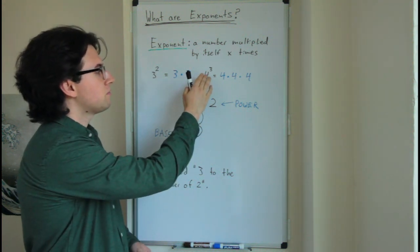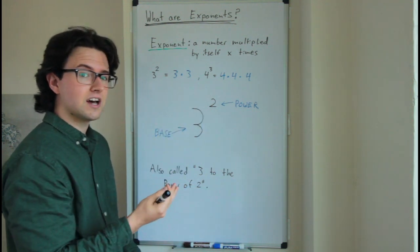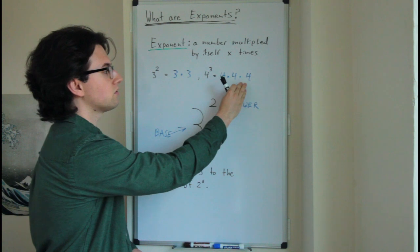Let's look at 4 to the power of 3. That means we're multiplying 4 by itself 3 times. So we get 4 times 4 times 4.